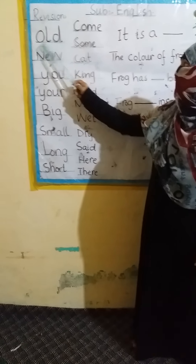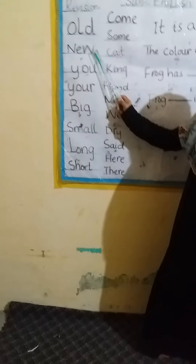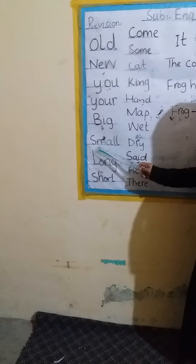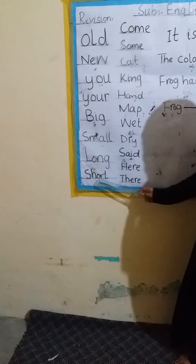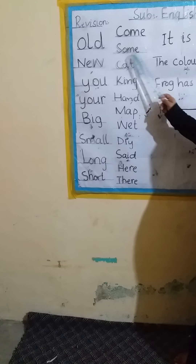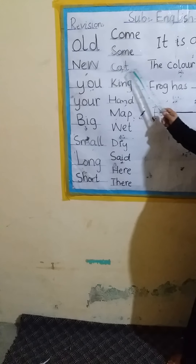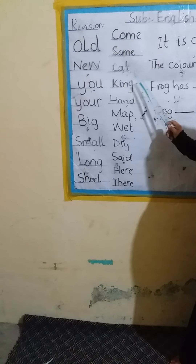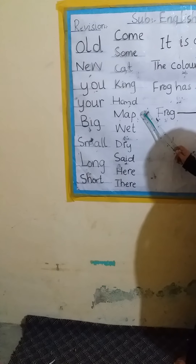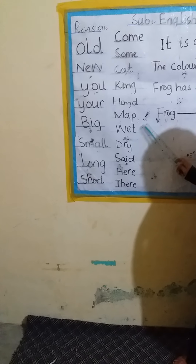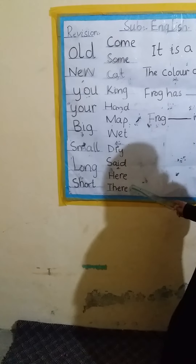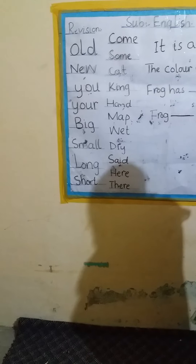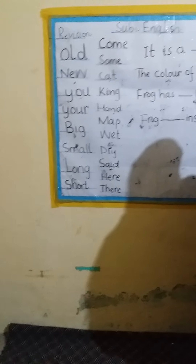Now we will repeat it again. Alt, New, U, Y, Big, Small, Long, Short, Come, Some, Cat, King, Ant, Map, Wet, Dry, Sad, Here, And There.